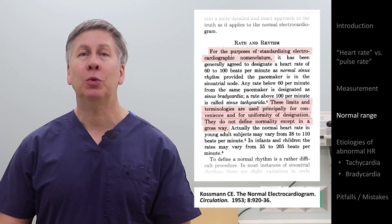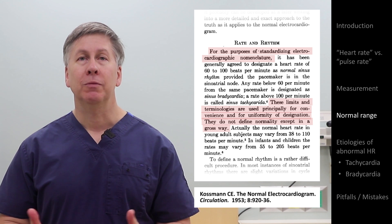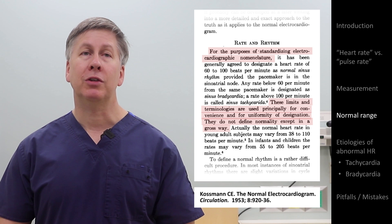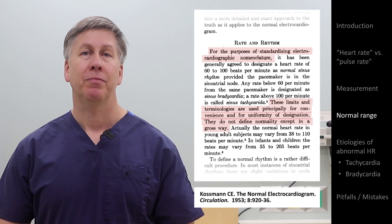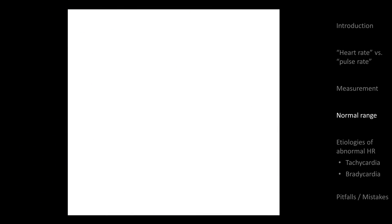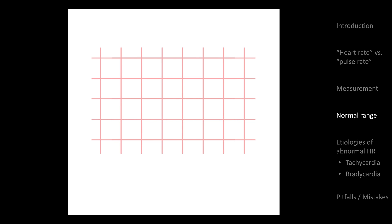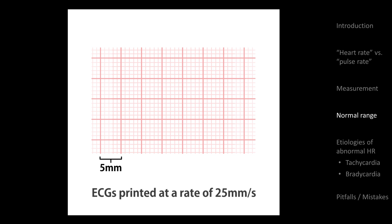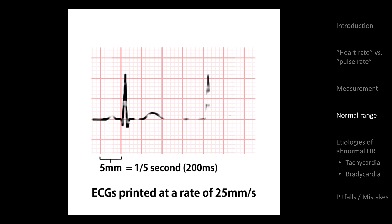And why was 60 to 100 the convenient range? It was most likely based on the standard speed with which electrocardiograms are printed on standard graph paper. Even by the 1940s, ECGs tended to be printed on graph paper subdivided into bold 5-millimeter and fine 1-millimeter boxes, most commonly at a rate of 25 millimeters per second. This means that every large box represents 200 milliseconds.